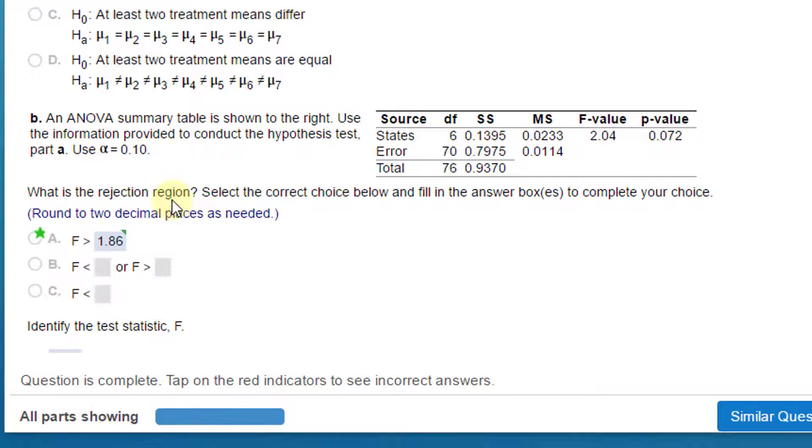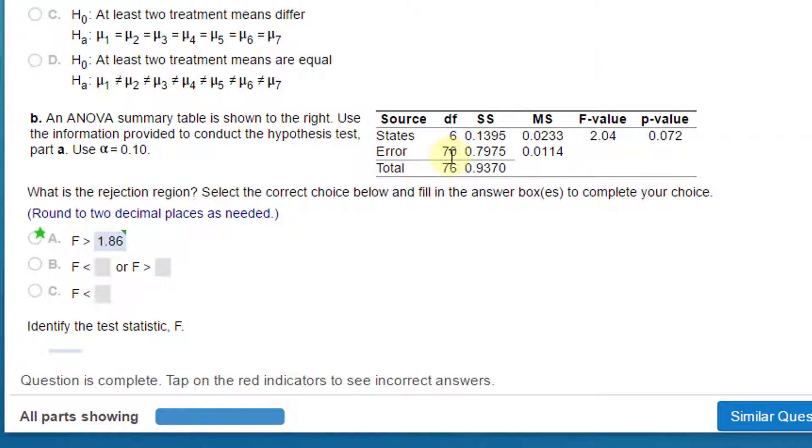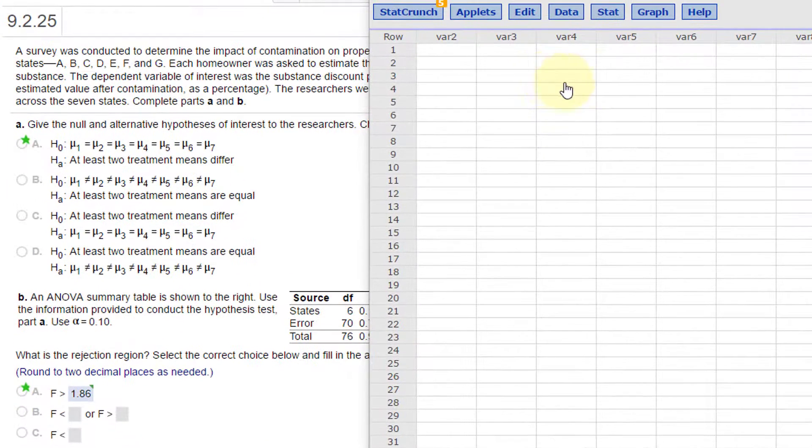The next thing is what is the rejection region. For the F distribution, it's always a right tail. We need the numerator and denominator degrees of freedom, and they give it to us in the ANOVA table. The first degrees of freedom for states is the numerator (6), and the error term (70) is the denominator. Let's call up StatCrunch and find this critical value.